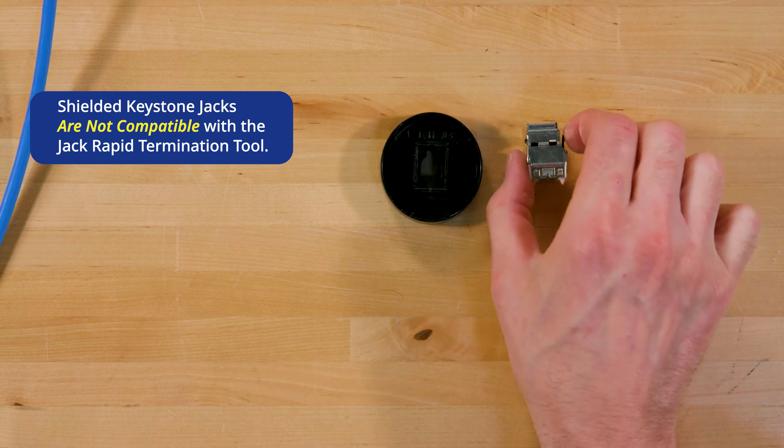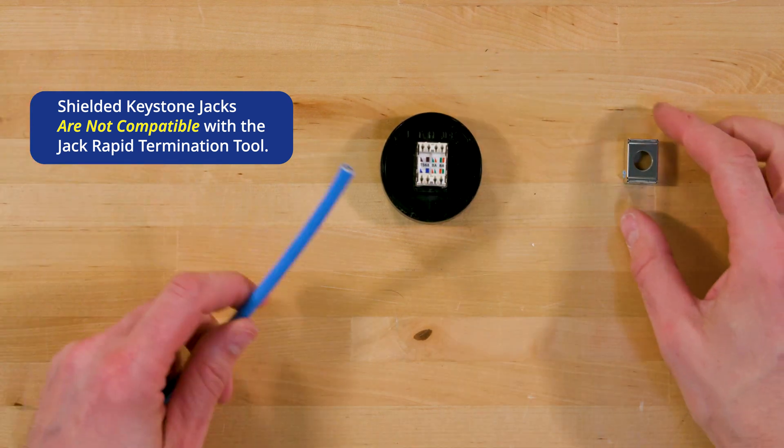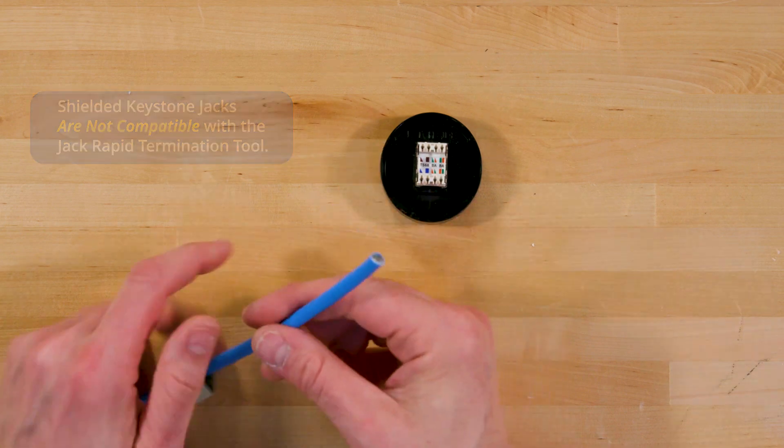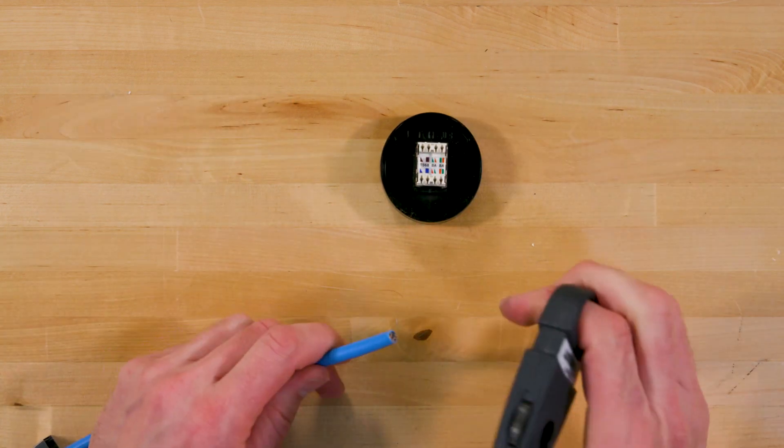Place the jack onto the punchdown base with the latch facing away from you. Place the wire cap onto the cable with the open side facing the end being terminated.